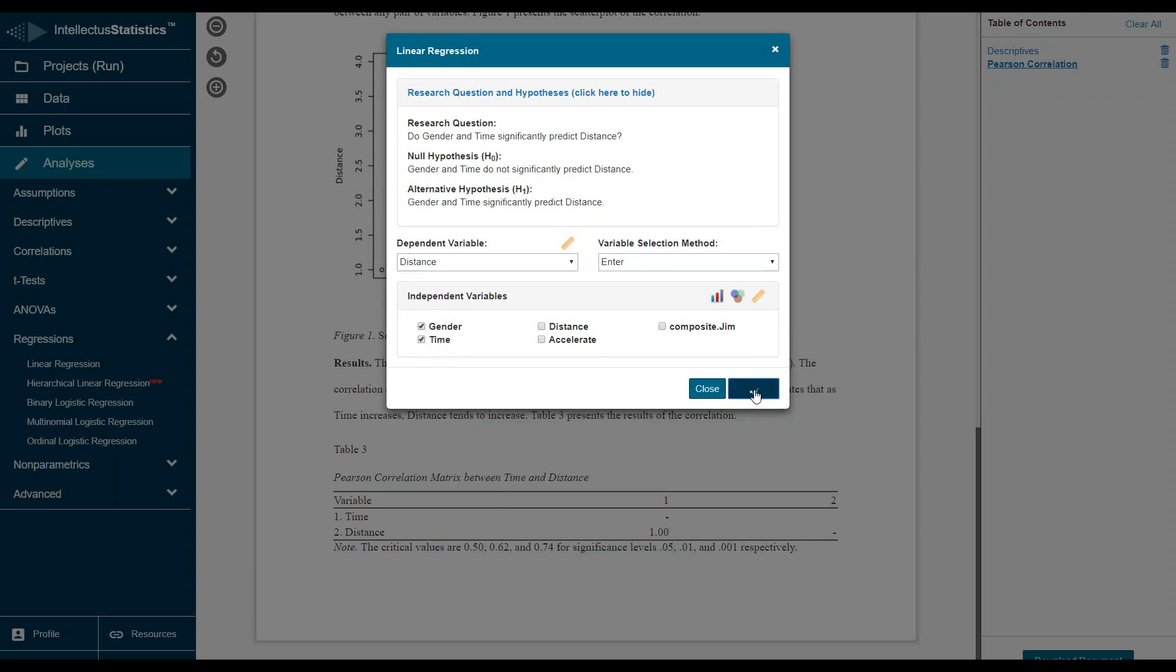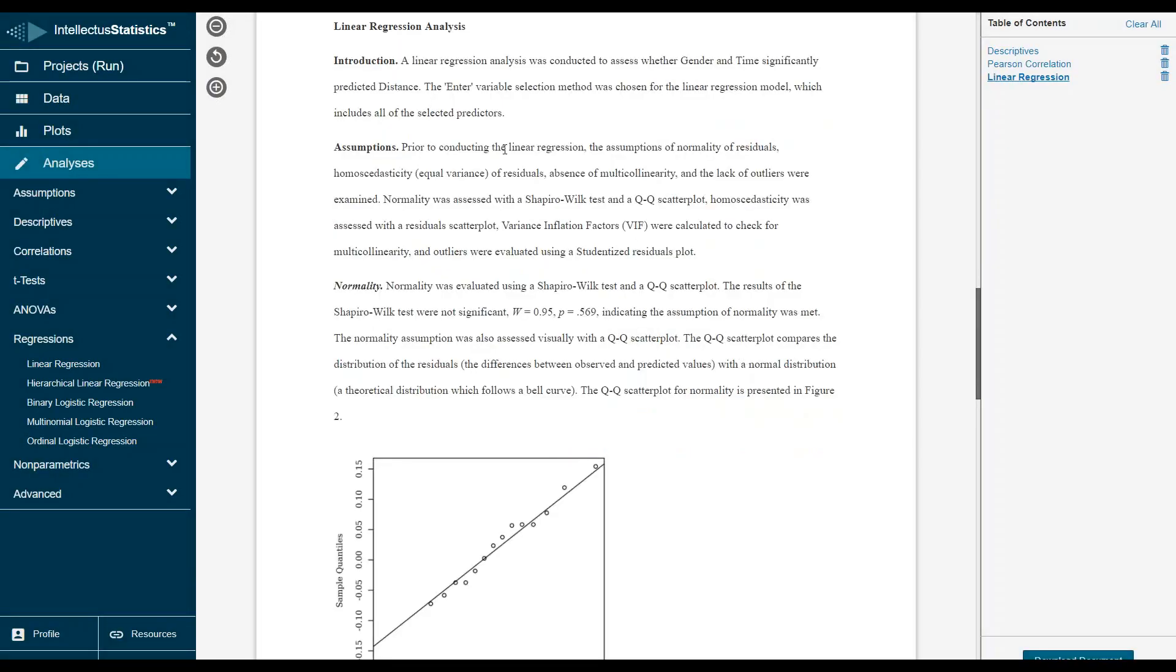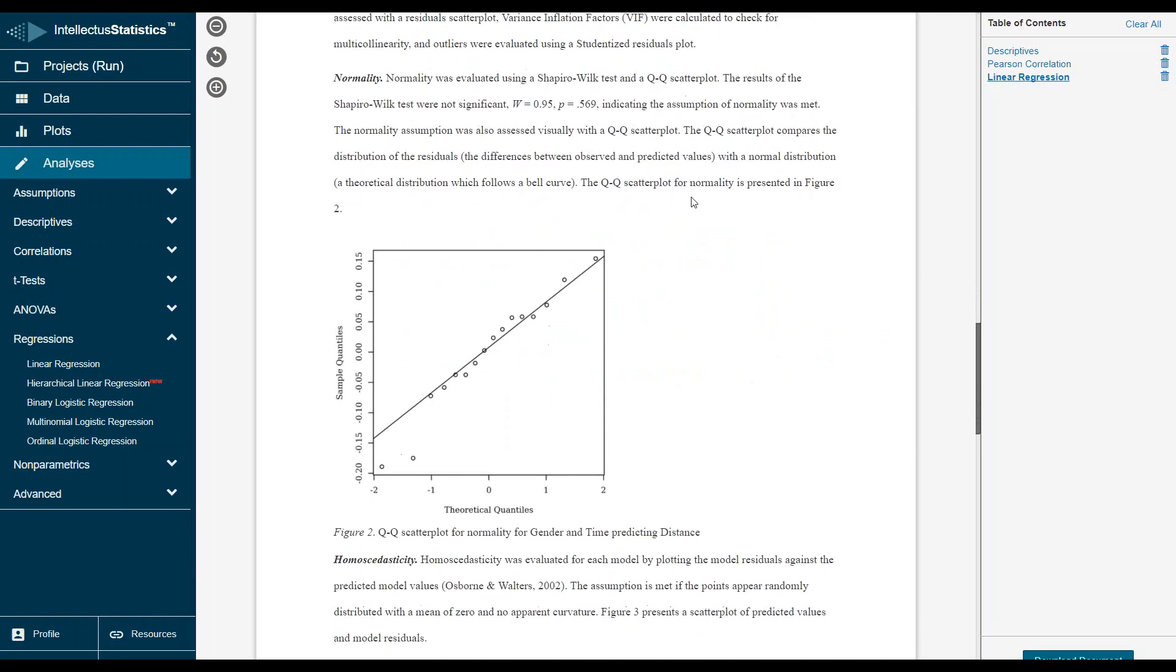It calculates. Here we are, we have the introduction that gender and time, that's the question: if gender and time significantly predicted distance. There's a few assumptions. One of those assumptions is normality and we really did it in two ways.